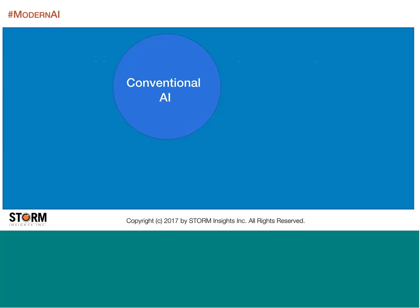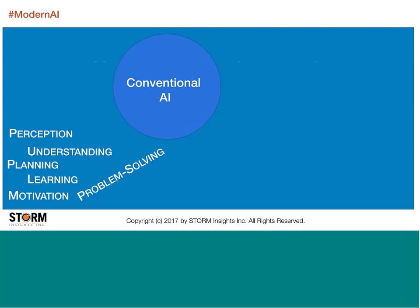Artificial intelligence as a discipline has been around for years. I don't want to spend time getting back to the 1950s and the Dartmouth Conference, or some of the early efforts to simulate human intelligence. But basically, throughout the early days of artificial intelligence, there were a number of topics that people thought were in bounds: perception, understanding, learning, planning, and motivation — all applied in general to problem solving.